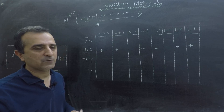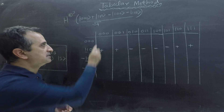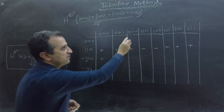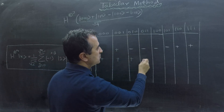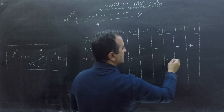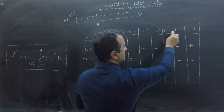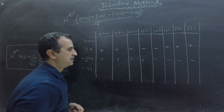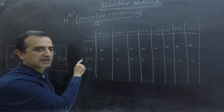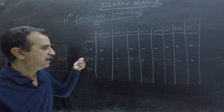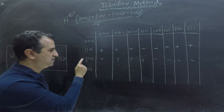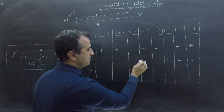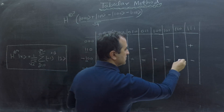If the first location has a 0, the sign is positive. So going through the columns: 0 → positive, 0 → positive, 0 → positive, 0 → positive, 1 → negative, 1 → negative, 1 → negative, 0 → positive. However, there is a minus sign on this row, so I have to flip all those signs. Because of this minus sign, the negatives become positive and the positives become negative.